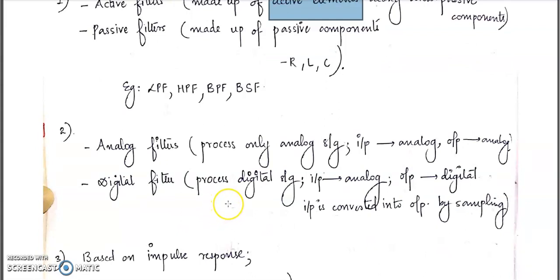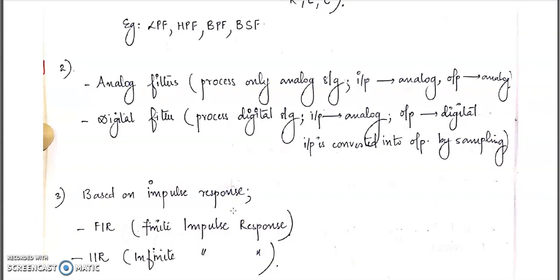The next category is analog filters versus digital filters. An analog filter processes only analog signals — the input and output must both be analog. In a digital filter, we process digital signals: the input may be analog, but it is converted to digital using a sampling operation, and the output is digital. The third category is FIR filters and IIR filters — FIR stands for Finite Impulse Response and IIR stands for Infinite Impulse Response — which will be discussed in the next video.